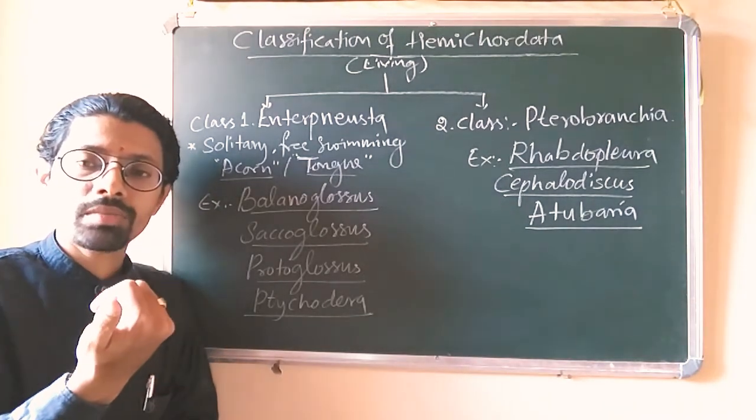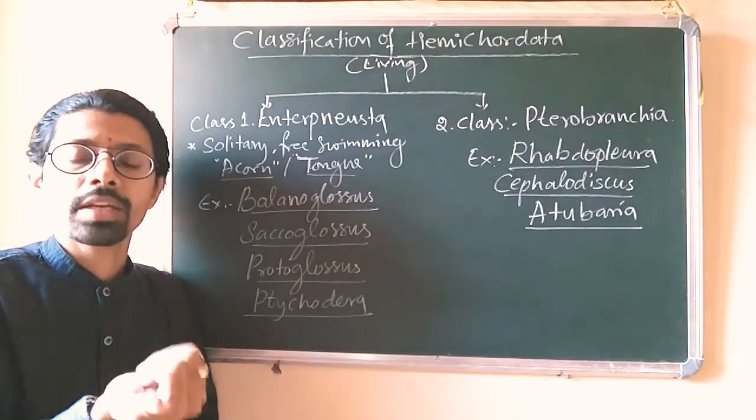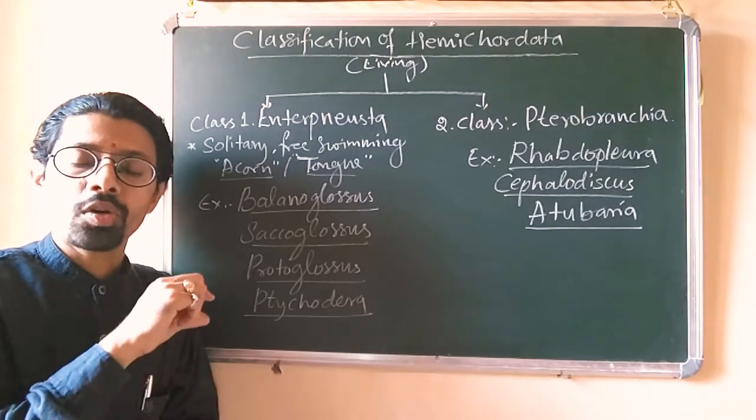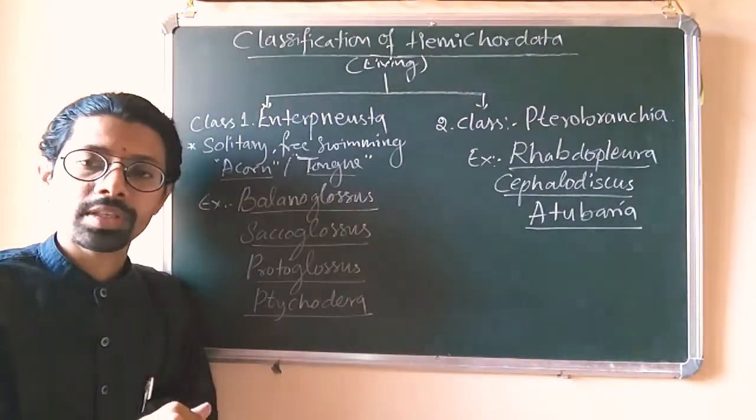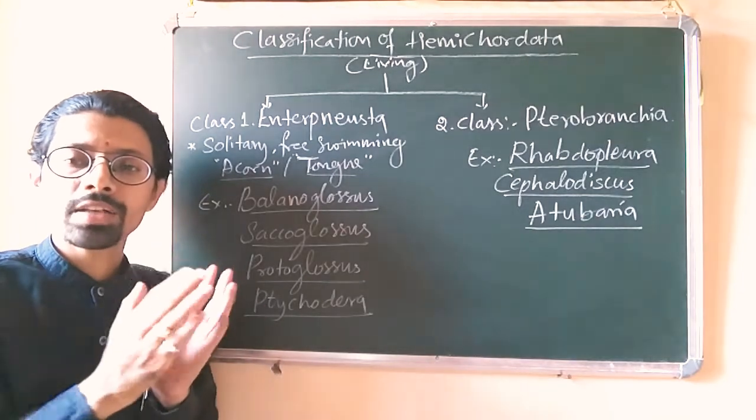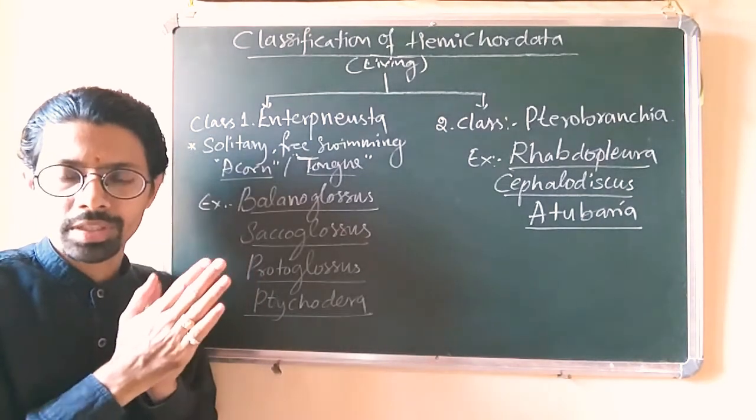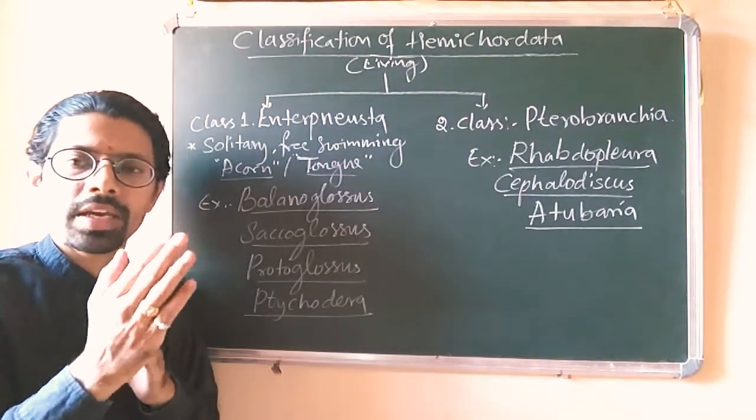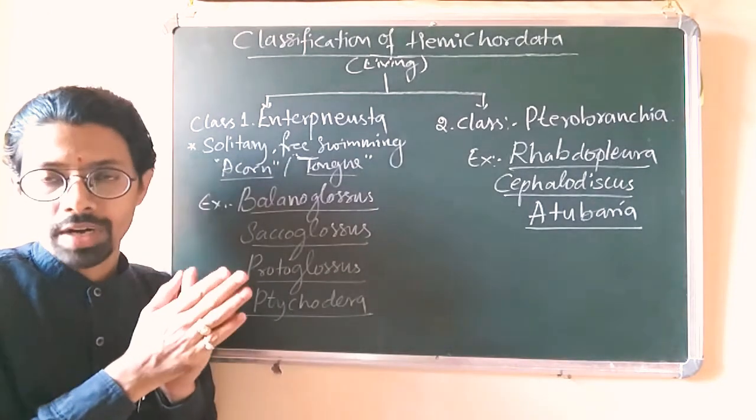If you talk about the dorsal hollow nerve cord, it is present in them. Numerous gonads, sac-like gonads, are present in their body. They are having sac-like numerous gonads.